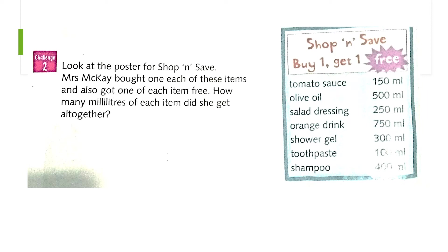The question asks: how many milliliters of each item did she get all together? Note the keyword 'get' — this refers only to what she received for free. Do not add the items she bought as well. You just need to add up all the items she got for free only.